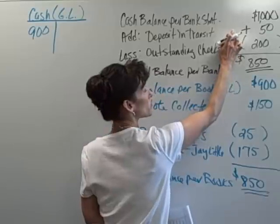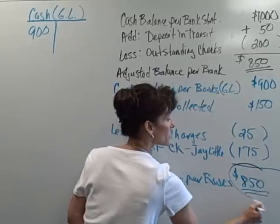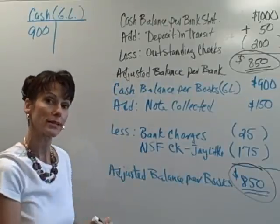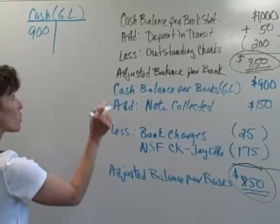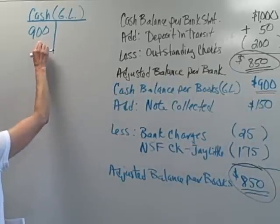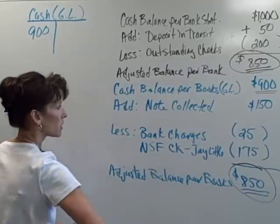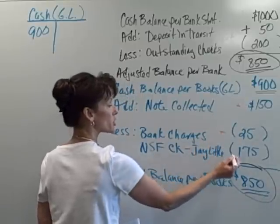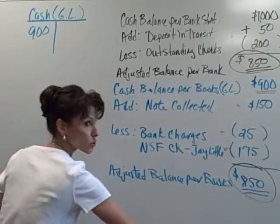So $1,000 plus the deposit in transit, less those outstanding checks, gives us an adjusted balance per the bank of $850. Notice that both of these numbers match, and they have to match in order for us to show we've reconciled our account — we really have $850. But right now the cash in our general ledger account is still showing $900. We need to make adjustments for the note that was collected, the bank charges, and the NSF check written by one of our customers. So we go to our general journal.